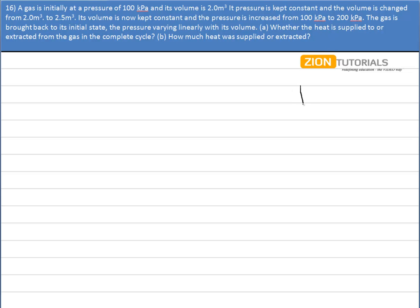Now let's draw the graph of it simultaneously. This is my PV curve. Initially the pressure is 100 kPa and the volume is increased from 2 to 2.5 m³. Let's say this is 2 and this is 2.5, and volume is in m³.